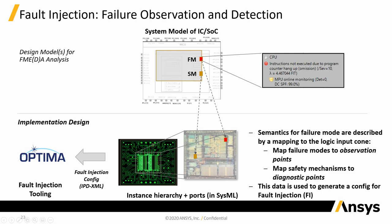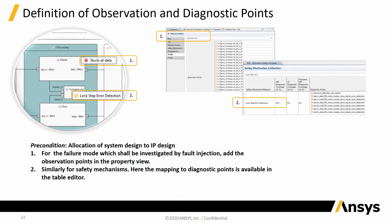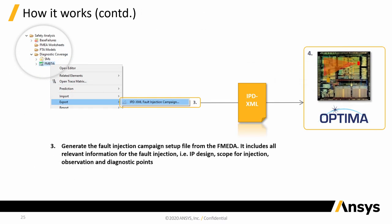In order to get more precise data for those failure modes and safety mechanisms which significantly contribute to the metric results, we can now prepare a configuration for a targeted fault injection campaign and hand over these configuration data to the Optima HE tool to perform a full analysis on potential hard errors. We identify these points at the high level, map them down to the individual instances in the IP design, and then hand that over to Optima. We identify in Medini the relevant ports at the IP design level and associate them to observation points for the relevant failure modes and as diagnostic points to the safety mechanisms. Medini then enriches the original IPD XML file with the fault injection data and hands it over to Optima.